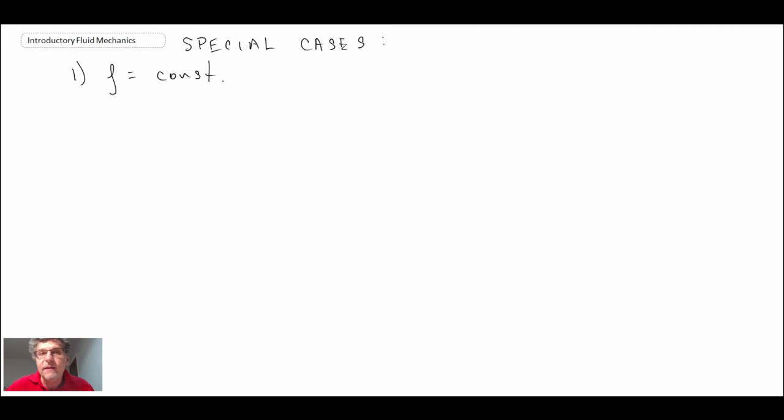So the first one where density is a constant. Now we call this a special form of flow, and we refer to that as being incompressible.